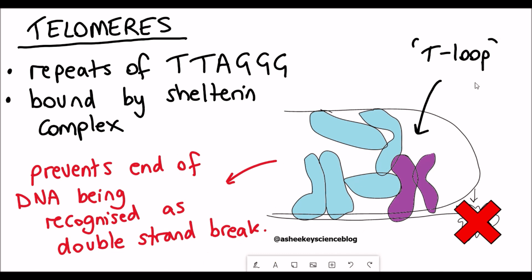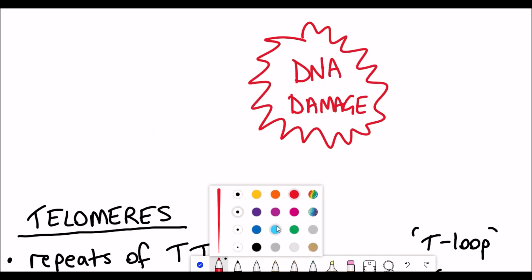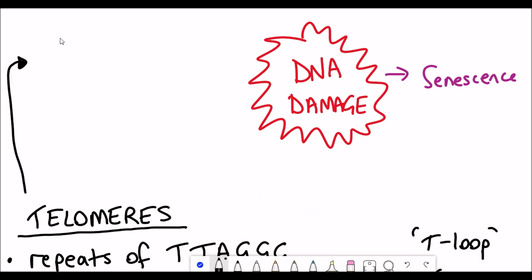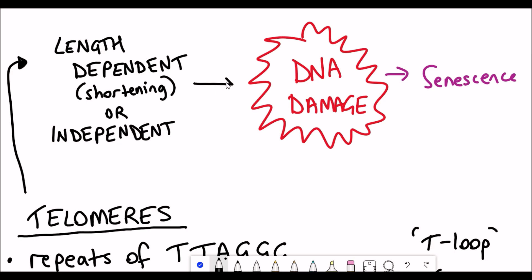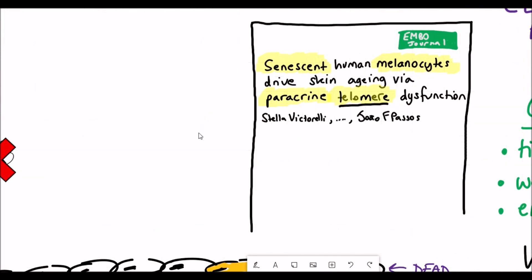However, as a cell divides and replicates, these telomeres shorten. If they shorten over time, you lose that protection and you can cause DNA damage signaling which can then drive senescence. However, there's also senescence induction via DNA damage that is independent of the shortening of the telomeres, which is particularly relevant to melanocytes that don't proliferate much whilst the keratinocytes do.